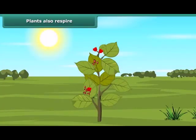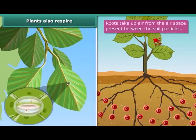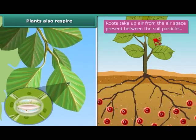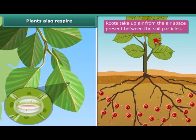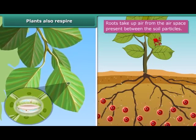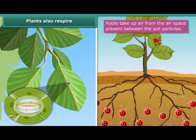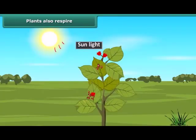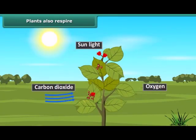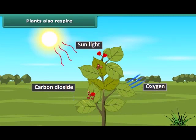In plants, respiration takes two different forms. In one form, the pores of the plant absorb oxygen and release carbon dioxide. These pores are present all over the plant body and even in the roots. In the other form, when photosynthesis takes place, plants absorb carbon dioxide and release oxygen.